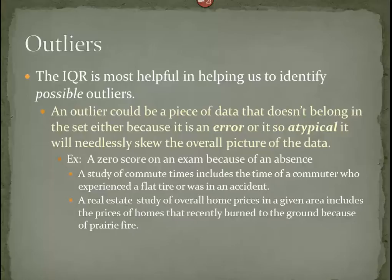Sometimes, if that's the case, that zero score, I may want to leave that out because I consider it not really a part of what I'm trying to look at. If someone did not take an exam, that zero should not be counted in the average because my goal is to figure out a picture of how people did who actually took the exam. Maybe also we were doing a study of commute times, and one of the commuter experienced a flat tire or was in an accident. That would probably give us a very long commute time, which wouldn't belong in our overall data set. Or maybe a real estate study of overall home prices in a given area include the prices of home that recently burned to the ground. Do we really want to include those in the price values of homes in a given area? These are all examples of numbers that could end up within a data set, but that really we might want to leave out.